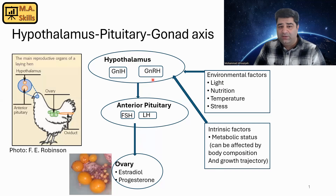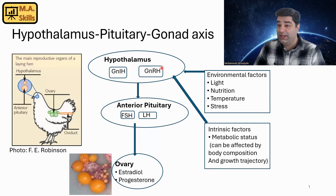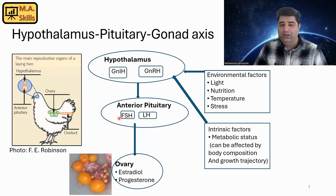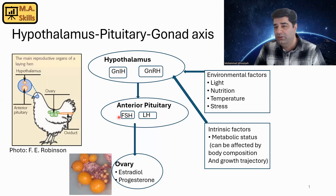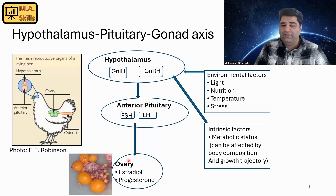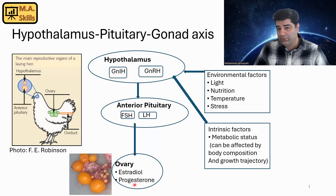Before talking about these factors, let's complete the explanation of the HPG axis. Secretion of GnRH — the gas pedal — triggers the pituitary to produce FSH and LH. FSH stands for follicle-stimulating hormone and LH stands for luteinizing hormone. These hormones then affect the ovary to produce estradiol or progesterone.